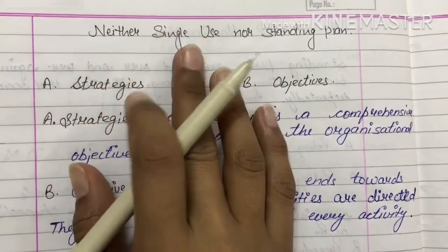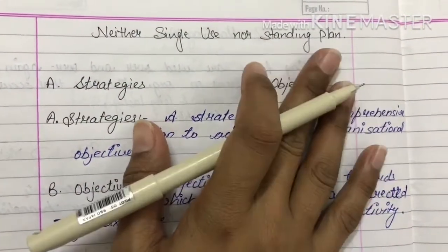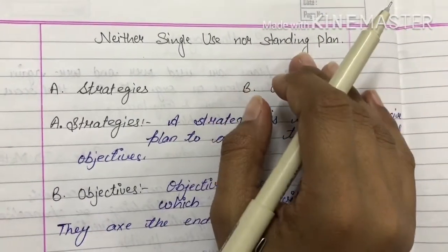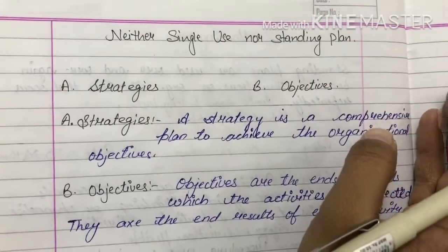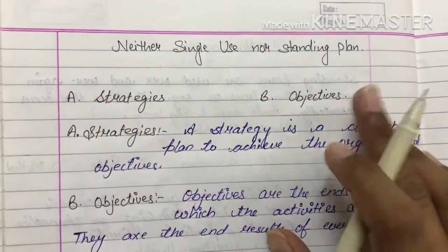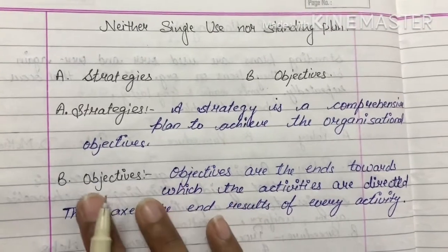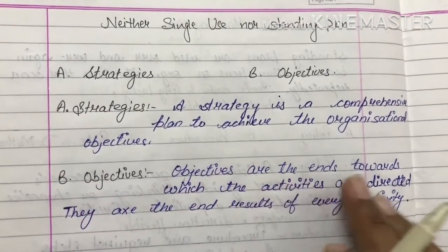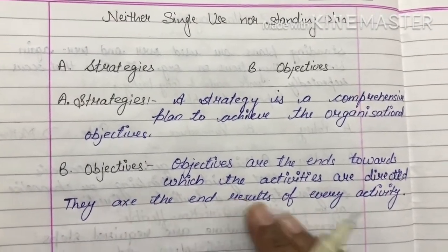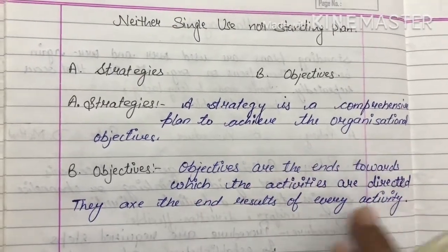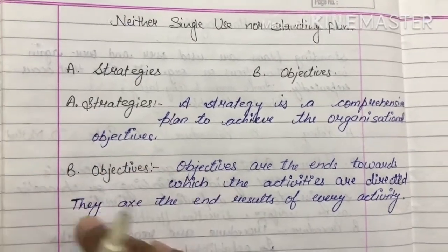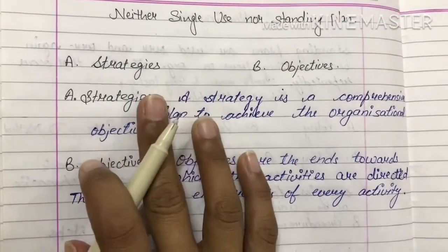Now we have neither single use nor standing plan. ये ना तो single use के लिए होते हैं, ना ही company में rigid form में होते हैं जिनको हम repeatedly use कर सकें. इसके अंदर हम दो चीजों को include करते हैं: one is strategies, another one is objectives. Objectives are the end towards which the activities are directed; they assess the end results of every activity. यानि हर एक activity का end result वो आपके objectives ही होते हैं, इन्हीं को attain करने के लिए हम सारी मेहनत और काम करते हैं.